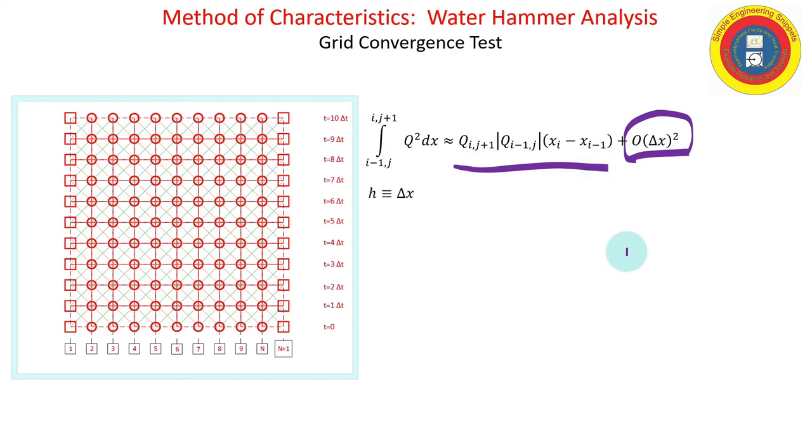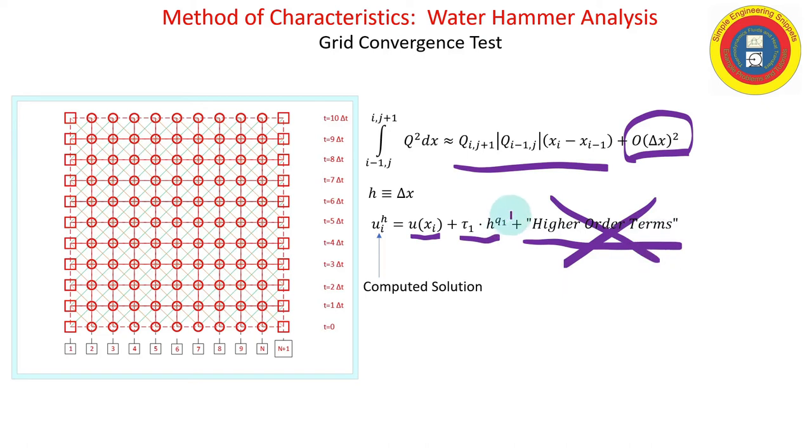And what do we mean by that? Well, first, let me call delta x equal to h. It's just a little bit cleaner in notation. And, looking at a Taylor's expansion, I have a computed solution at point i using step size h. That's equal to the exact solution plus some error terms. And, right off the bat, we typically throw out the higher-order terms. So, the first error term, in this case, q1, that's what we call the order of our scheme.